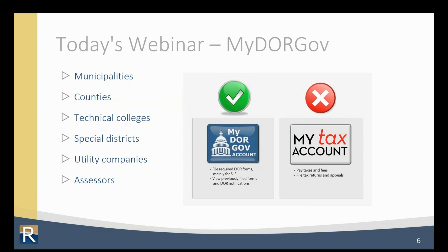If you are a real property lister and you file the Statement of Assessment for your municipalities using the file transfer option, you also don't need access to MyDORGov. However, a property lister may request access from a municipal clerk to file the SOA on their behalf or request access to file the Open Book and Board of Review Calendar. We'll go over how to request access and file forms later in this webinar.